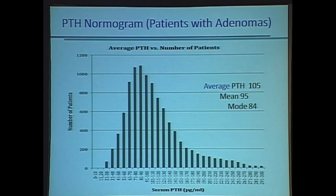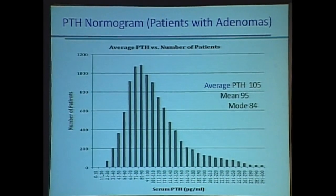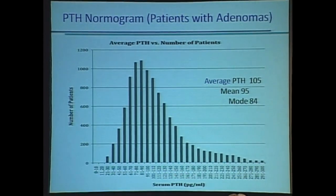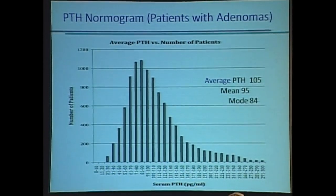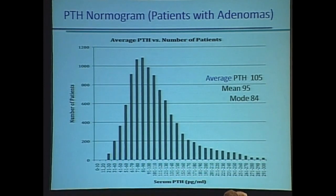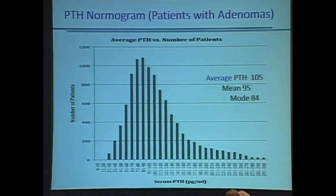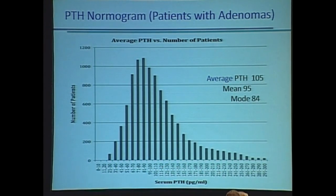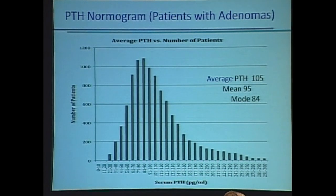We're not operating on people based on parathyroid hormone levels alone. If you're sending us a patient with a parathyroid hormone level of 240, I can guarantee that patient's had a parathyroid tumor for a decade or more. We can tell much more about the age and duration of the disease by the degree of elevation of the parathyroid hormone than we can the calcium.